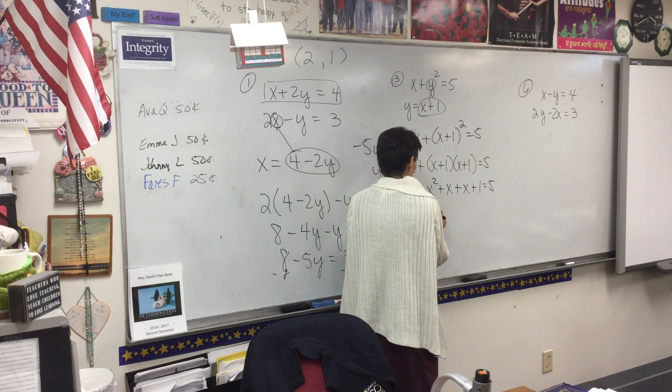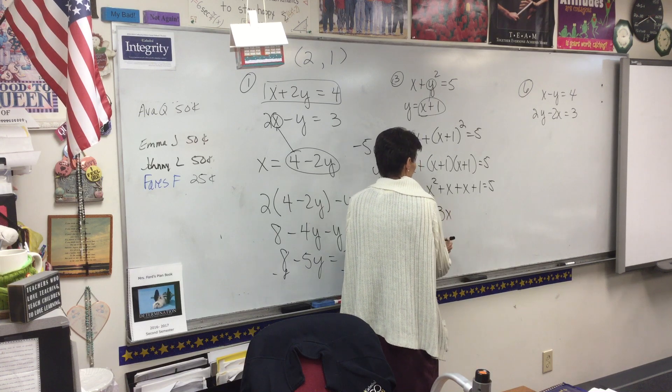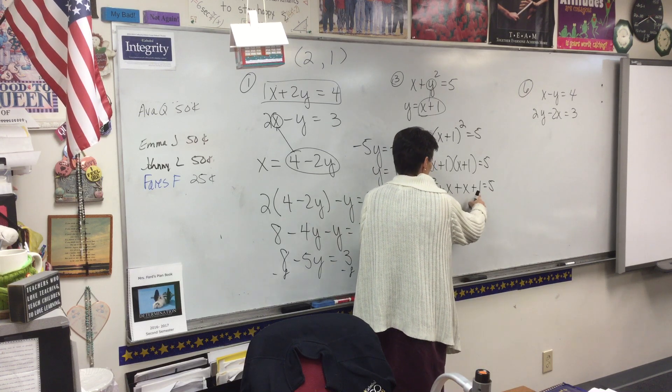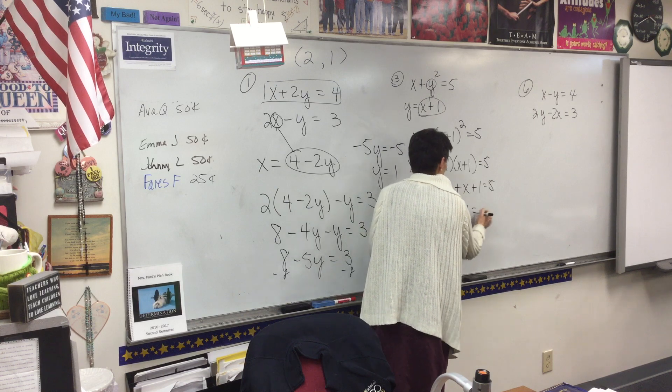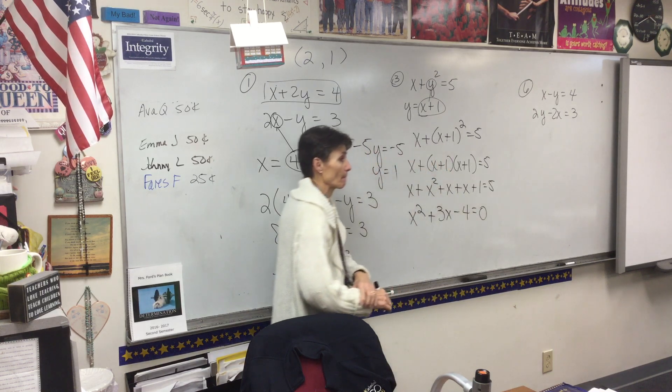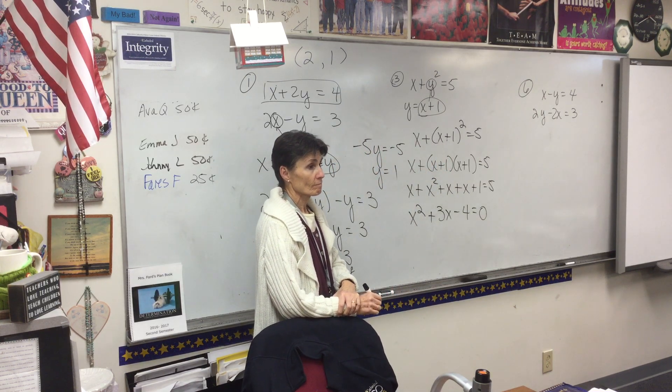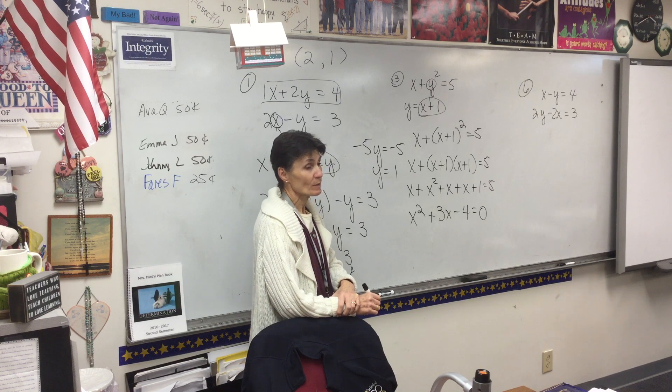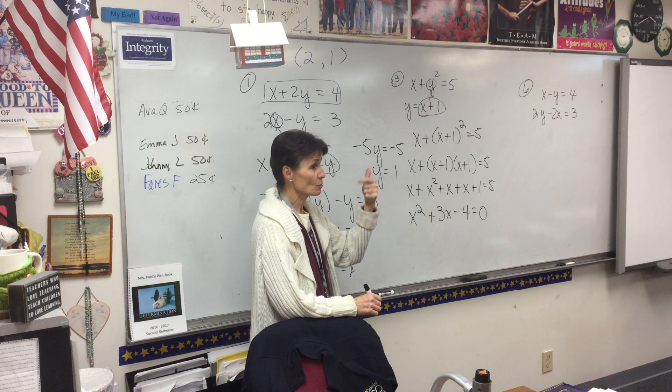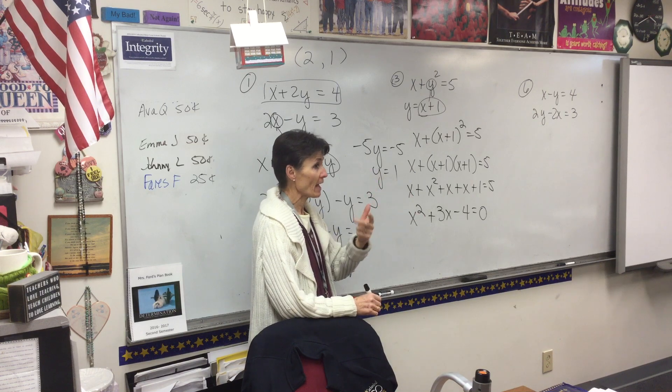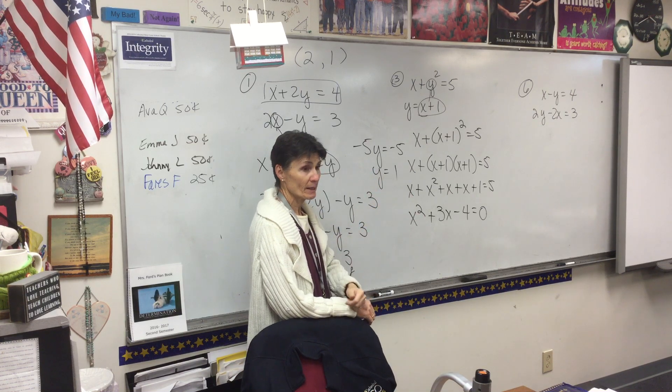So we got an x squared. Now, 1, 2, 3 x's. Now I've got to move this over, so that's going to be minus 4. Remember, quadratic equations, we get set equal to zero. And then we either complete the square, quadratic formula, or factor. Does that guy factor by any chance? Yep.